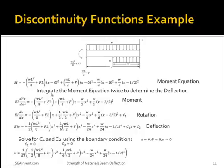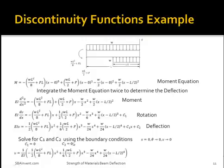Using the discontinuity functions, the moment equation becomes: M = −(wL²/8 + FL)⟨x−0⟩⁰ + (wL/2 + F)⟨x−0⟩¹ − (w/2)⟨x−0⟩² + (w/2)⟨x−L/2⟩². Now that we know the moment equation, we can integrate it twice to determine the deflection. Due to the integration, we have two unknown c constants. Using the boundary conditions — rotation equals 0 and deflection equals 0 at the wall where x equals 0 — we get c1 equals 0 and c2 equals 0. So the resulting deflection equation is (1/EI)[−(1/2)(wL²/8 + FL)x² + (1/6)(wL/2 + F)x³ − (w/24)x⁴ + (w/24)(x−L/2)⁴].